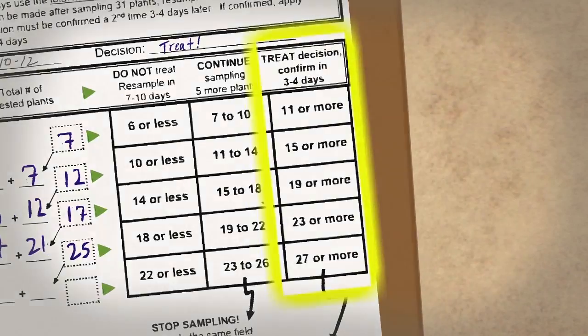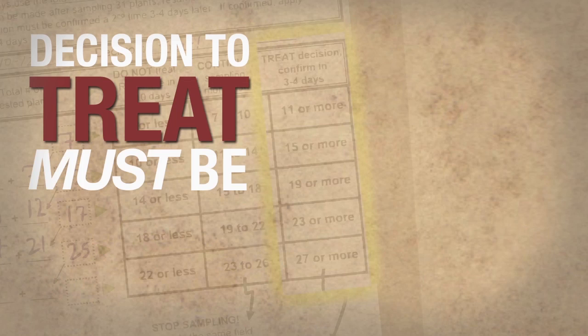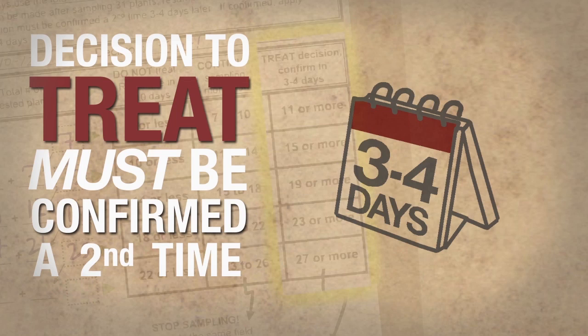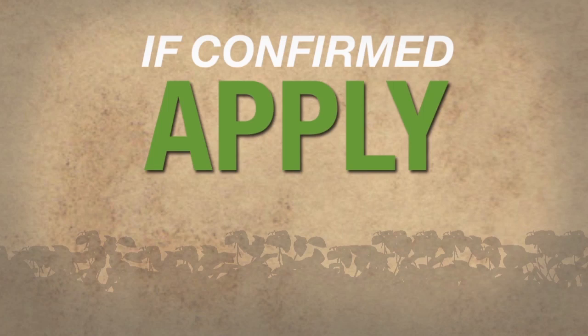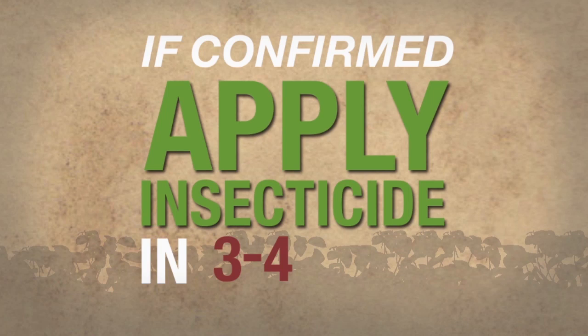And finally, a decision to treat must be confirmed a second time 3 to 4 days later. If confirmed, apply insecticide in 3 to 4 days. Happy Speed Scouting!